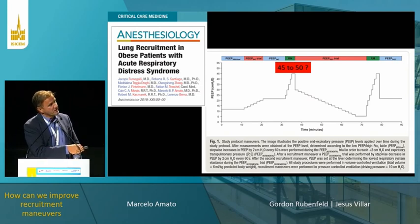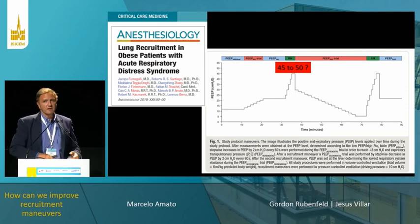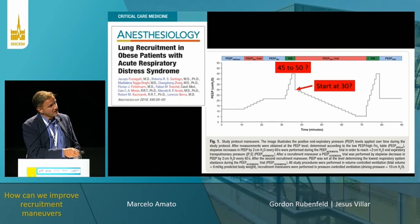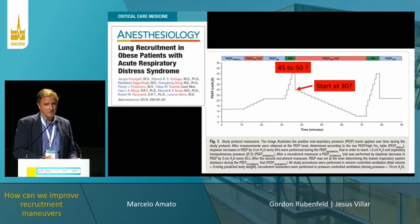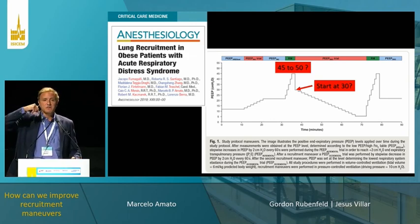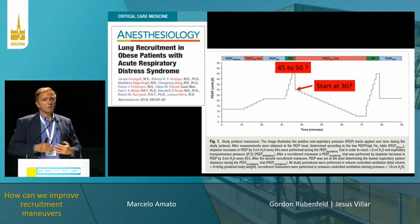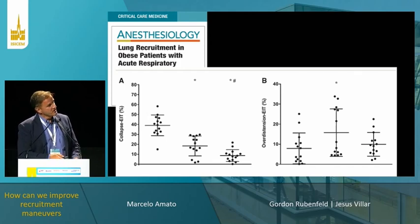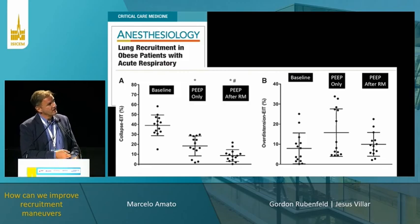For very obese patients, the highest pressure used was 50 instead of 45. We started titration in some patients at 30 of PIP because for some, the crossing point was at 26–28 of PIP. With an esophageal balloon measuring transpulmonary pressure, the value was zero. When we applied this PIP in super-obese patients, the average PIP was 22.